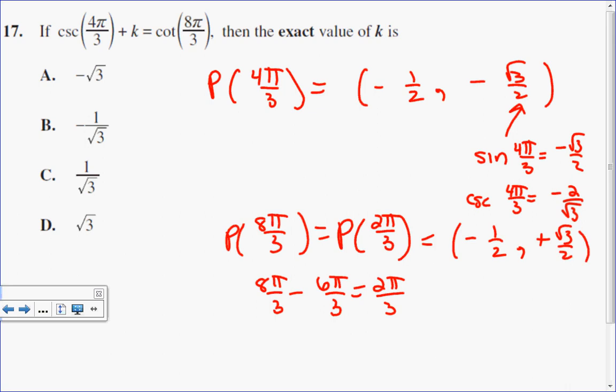We're looking at cotangent, which is the ratio of cosine over sine. So since the denominators are the same, to divide cosine by sine, I know that cotangent of 8π over 3 will equal negative 1 over root 3.